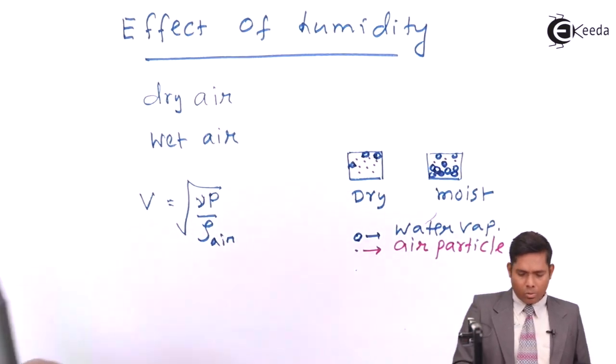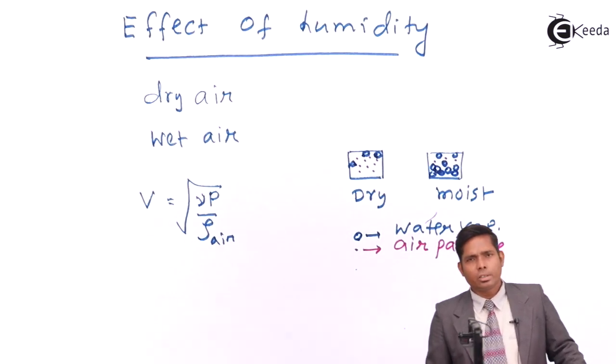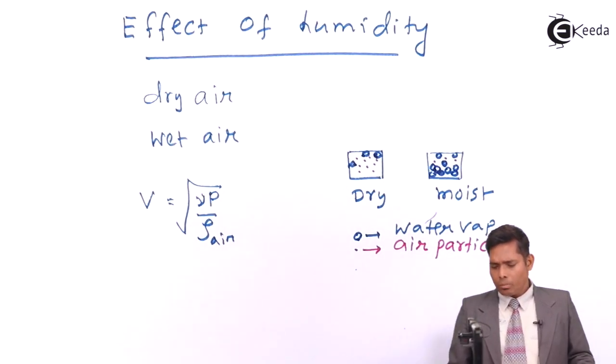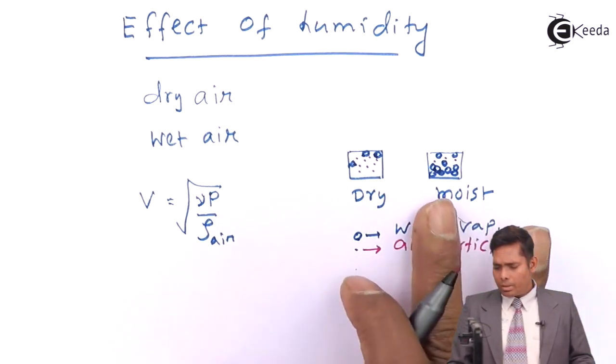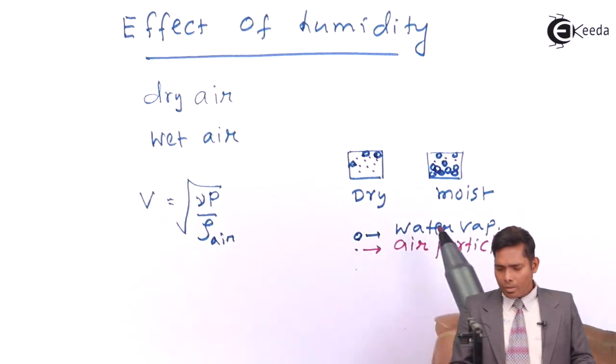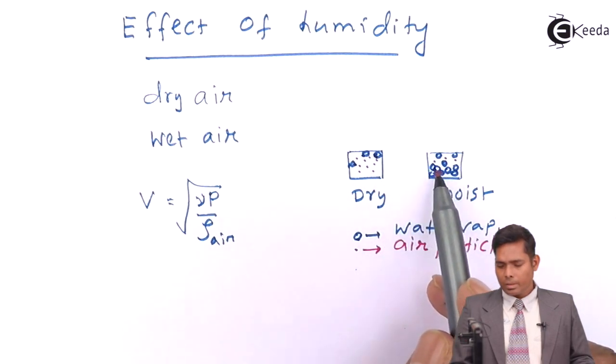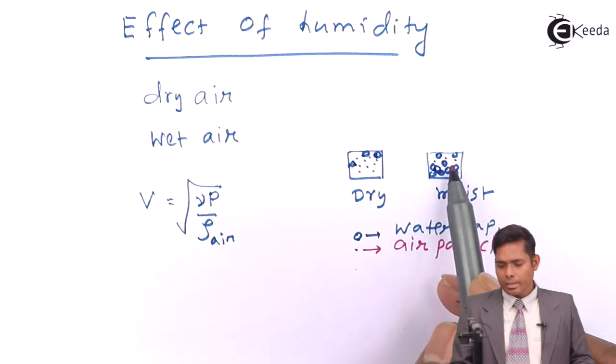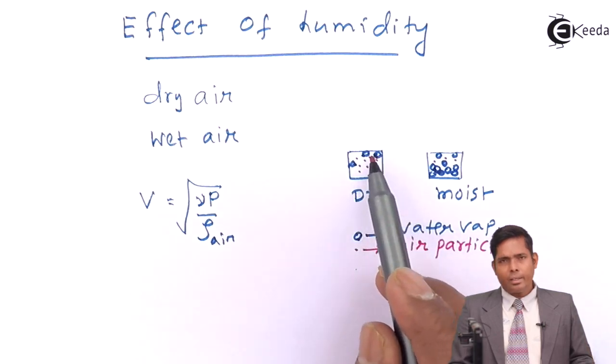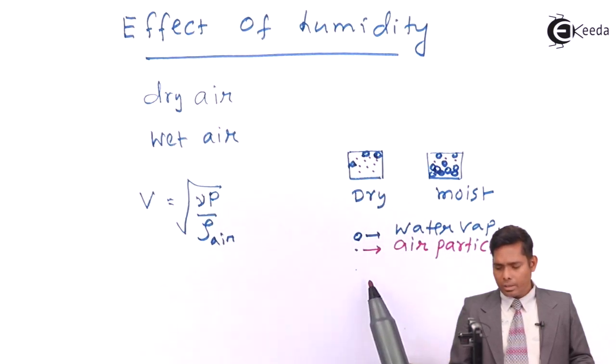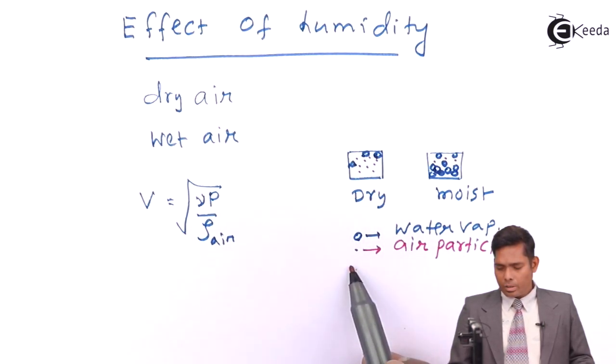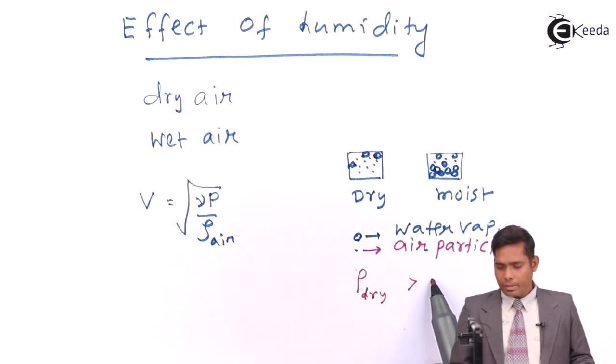So in which case do you think the density will be more? In this case, the density of air is more, and here the density of air is less. So dry air has more density. Density of dry air is greater than density of wet air.